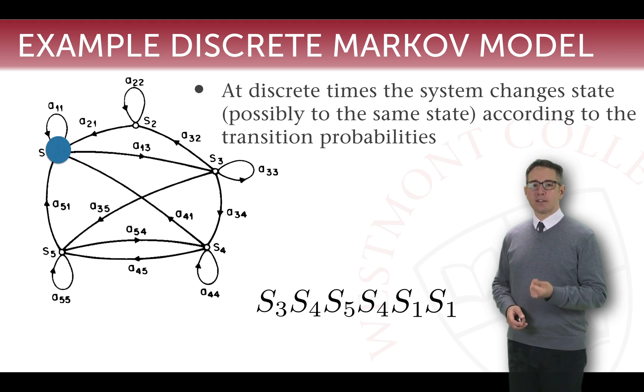This gives us an observation sequence of S3, S4, S5, S4, S1, S1, representing transitions through our model.